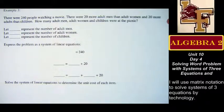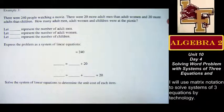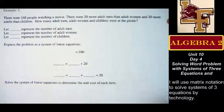Let's read the situation. 240 people watching a movie. There are 20 more adult men than adult women, and 20 more adults than children. How many adult men, adult women, and children are at the picnic? It seems like this is a movie-in-the-park scenario — like at McKelvey Park where they put up a big sheet and project a movie, and you take your family into the park and have a picnic in the grass while watching. You've got 240 people doing that: 20 more men than women, 20 more adults than kids.